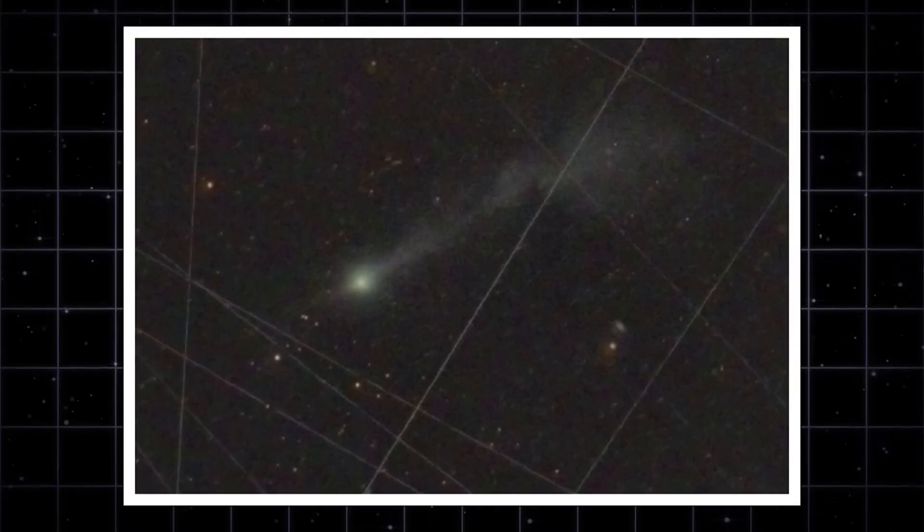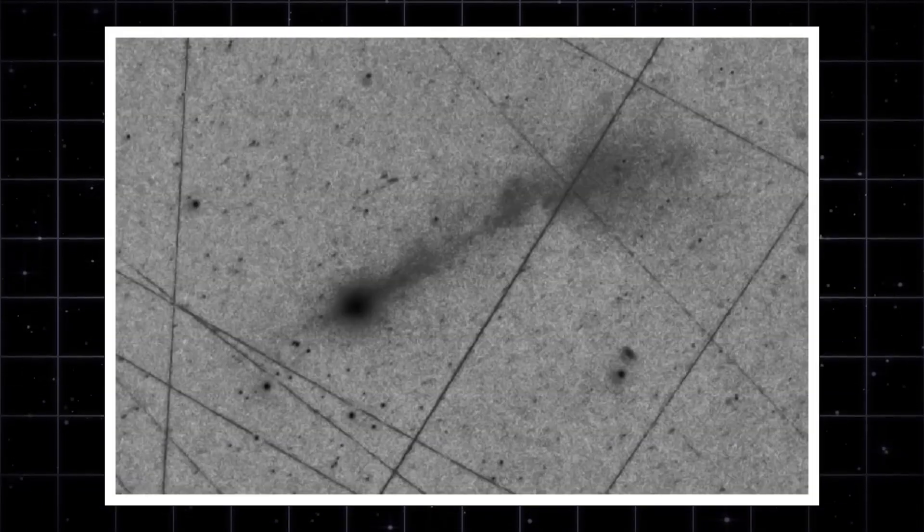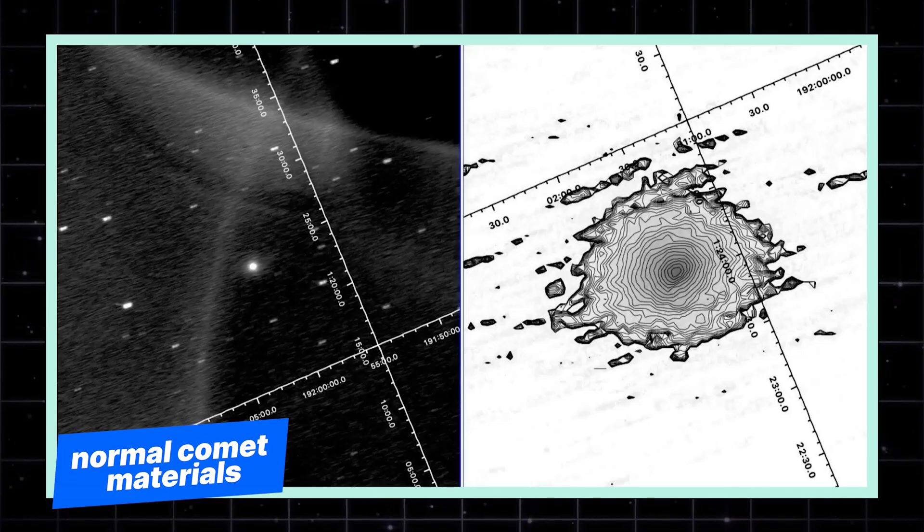Here's what's about to go down. In the next few weeks, we're getting spectroscopy data that will tell us exactly what's in those jets. If that data shows normal comet materials, scientists will breathe a sigh of relief and make up some story about exotic ice.